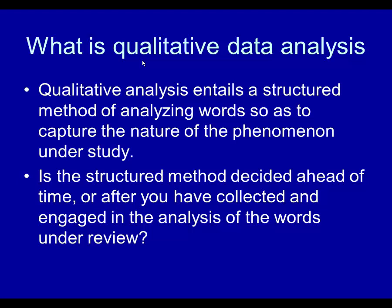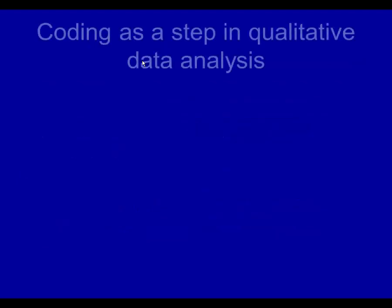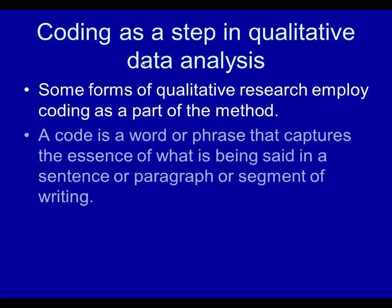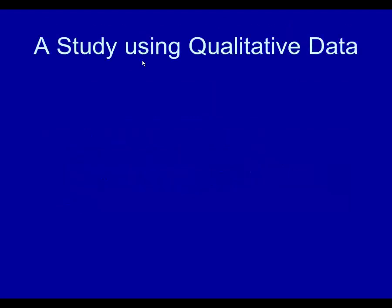Do you lay out your procedures ahead of time — we're going to do this first, then this, then whatever — or do you wait until it's all done and decide? The answer is ahead of time. That is critical to what research is all about: having methods that are decided upon ahead of time. Coding is one step in qualitative data analysis. A code is a word or phrase that captures the essence of what is being said in a sentence, paragraph, or segment of writing — reducing a lot of words to just a few that capture the meaning and help you understand the phenomenon under study.